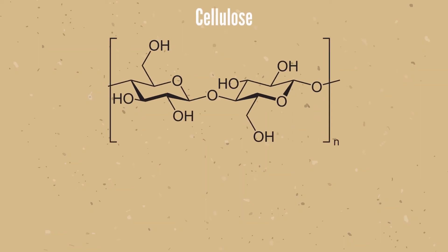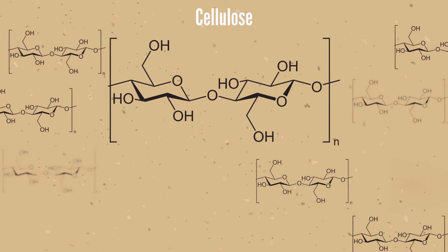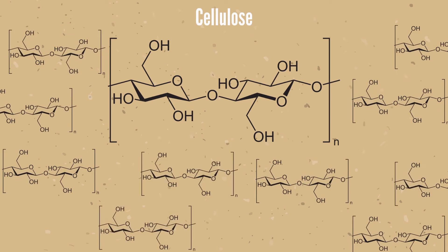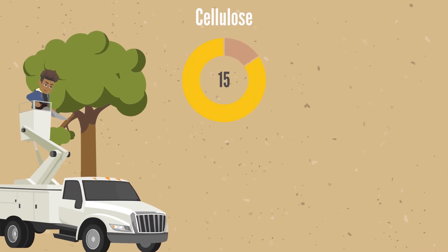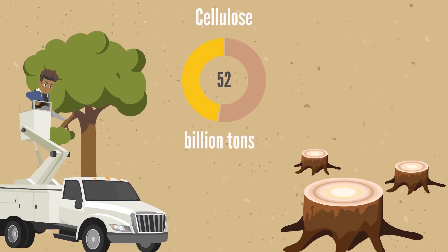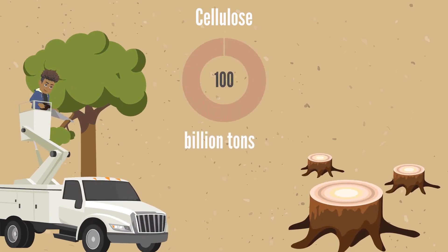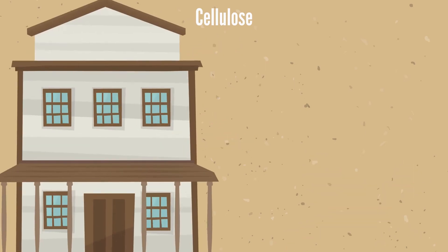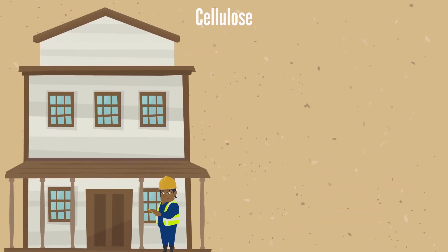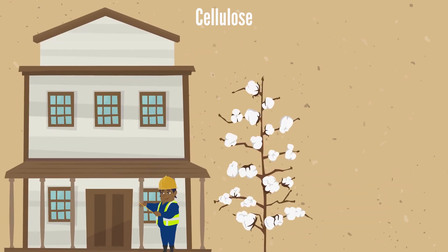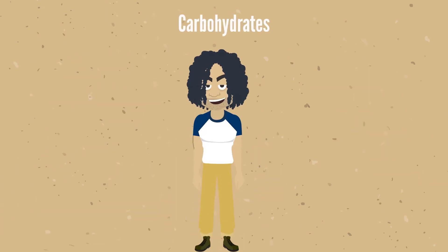Cellulose is the most abundant carbohydrate and, indeed, the most abundant organic molecule on earth. Over 100 billion tons of cellulose is produced by plants each year. Wood, a cellulose plant product, is used for construction, and cotton is used for cloth.